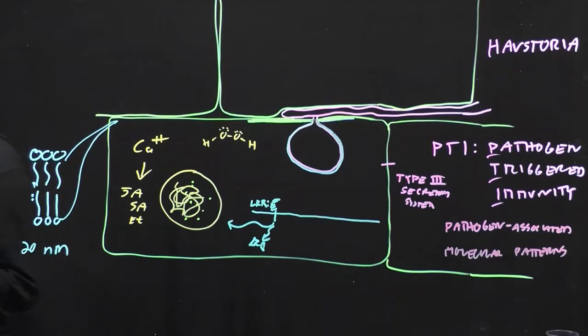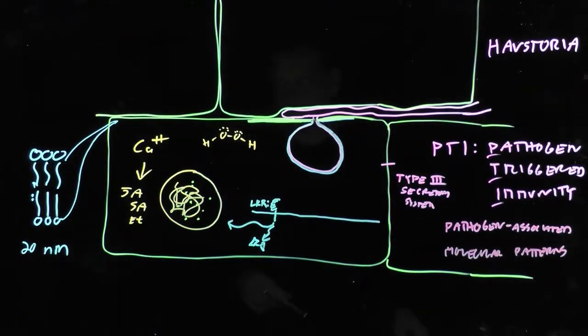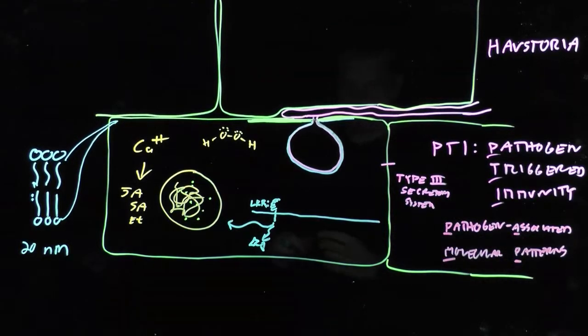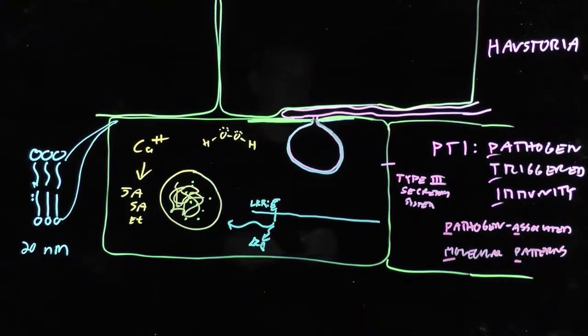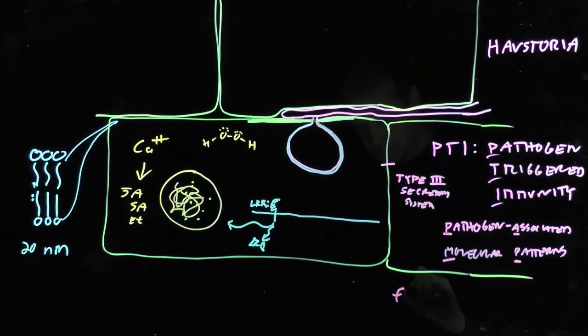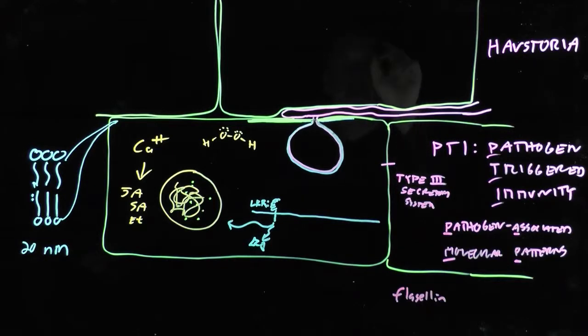So, these PAMPs are molecules that the pathogen requires for its primary metabolism, for simply existing, it must make these molecules. And therefore, it's not able to not make them in order to avoid setting off this alarm system. So, in the case of bacteria, there's a couple of well-known ones that are the models. One is flagellin, which is a component of the flagella that bacteria use to get around.